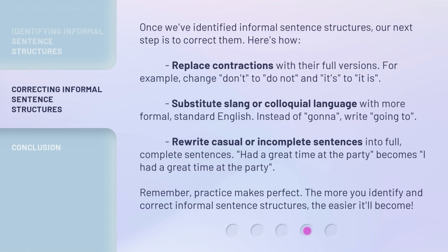Once we've identified informal sentence structures, our next step is to correct them. Here's how: Replace contractions with their full versions — for example, change 'Don't' to 'Do not' and 'It's' to 'It is.' Substitute slang or colloquial language with more formal, standard English — instead of 'gonna,' write 'going to.' Rewrite casual or incomplete sentences into full, complete sentences — 'Had a great time at the party' becomes 'I had a great time at the party.'